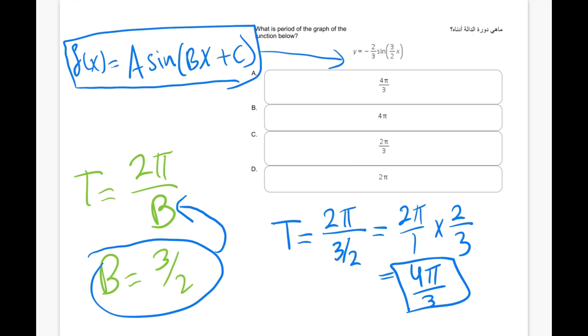Let's take a look at the options that we have. And the correct answer would be A, which is 4π over 3.